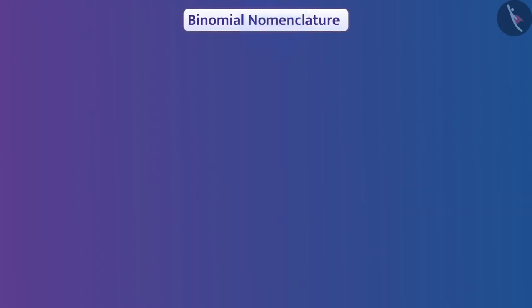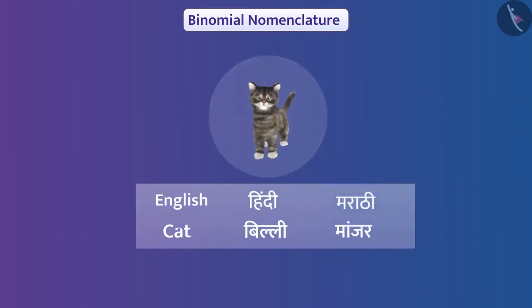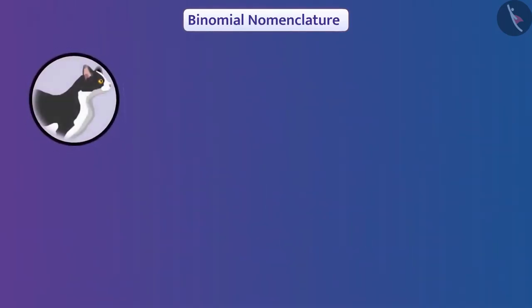Now let's talk about binomial nomenclature. We know that organisms have different names in different languages. This can cause various difficulties — when a person is talking about an organism in one language, a person speaking another language may not understand which organism is being discussed. To solve this problem, the binomial nomenclature proposed by Carolus Linnaeus was chosen. In this method, any organism is given a scientific name and is known by that name.